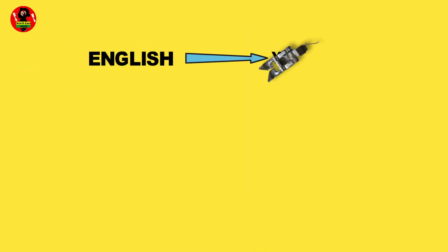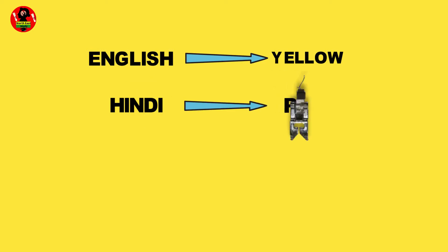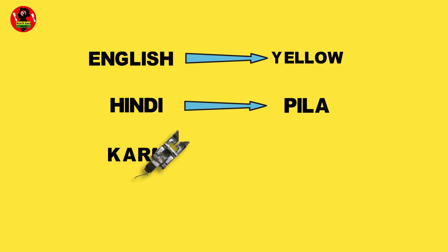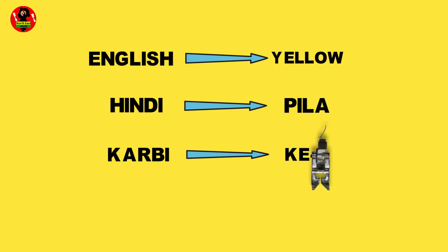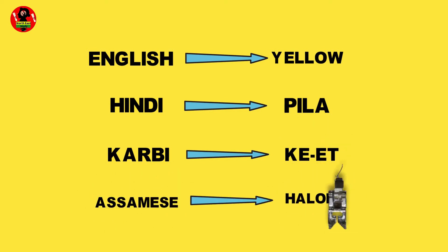English: Yellow. Hindi: Pila. Karbi: Kiet. Assamese: Haludhiyah.